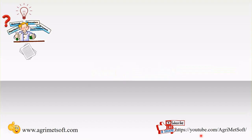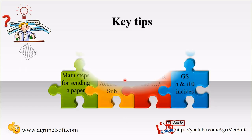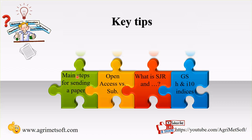Other key tips I'll cover in the next videos include the main steps for sending a paper — for example, how to write a cover letter, what the main criteria are for selecting reviewers and introducing them to the editor, and many other steps. There are also points you should learn before sending your paper, such as open access versus subscription formats. There are two kinds of journals — open access and subscription — and I will show you the advantages and disadvantages of both.